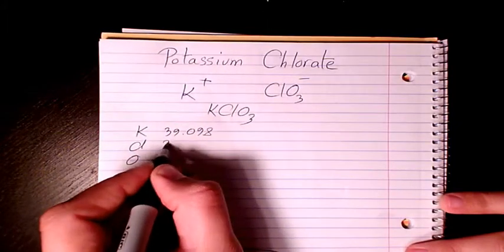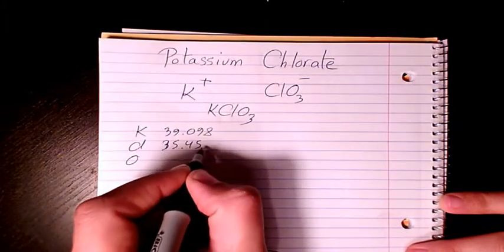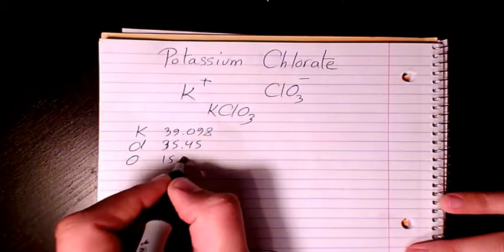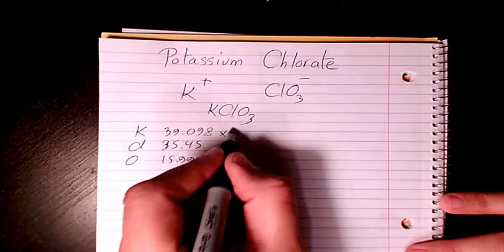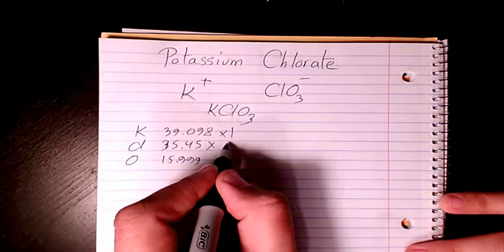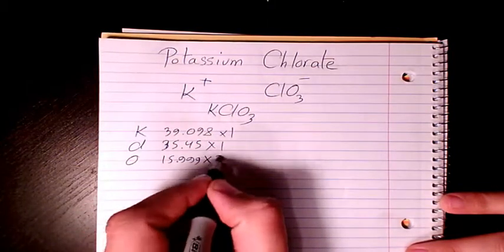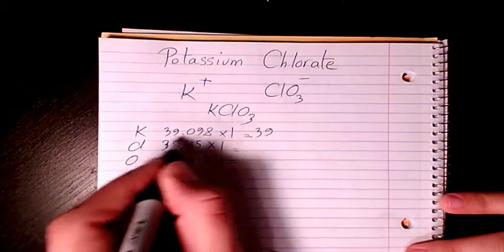Chlorine is 35.45 and oxygen is 15.999. How many atoms of potassium do we have? We have just one. How many atoms of chlorine? We have one, and we have three oxygen. So it's 39.1 times...